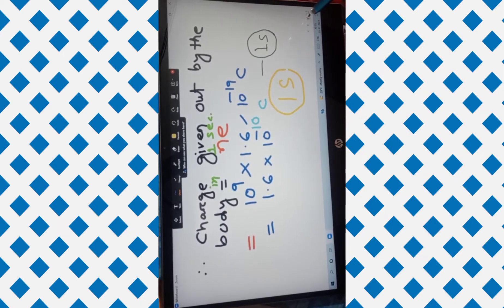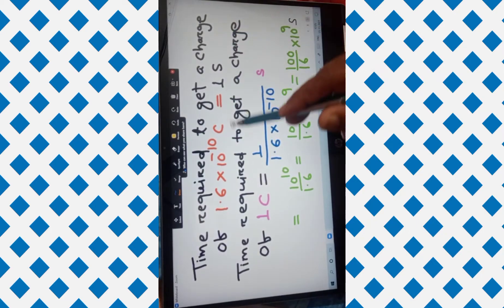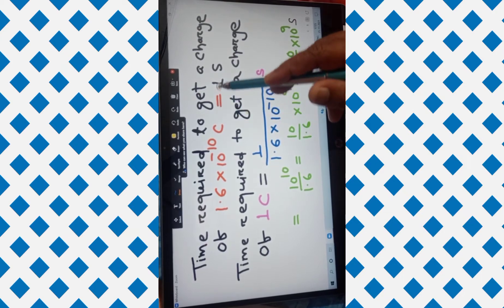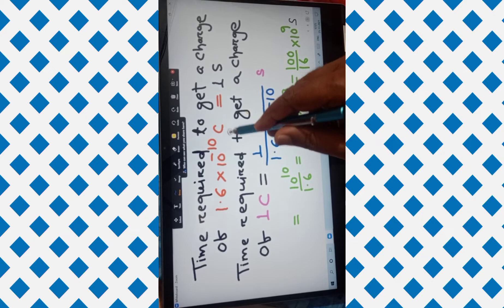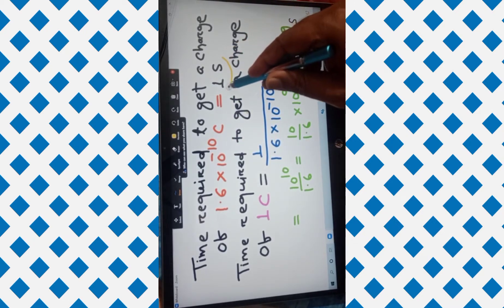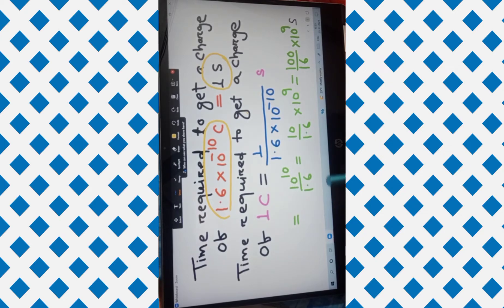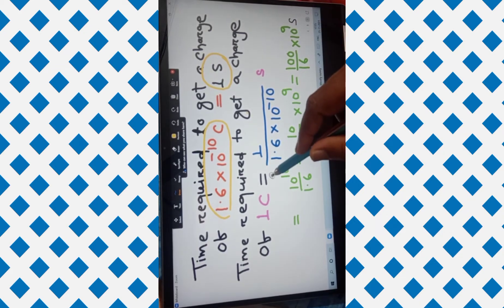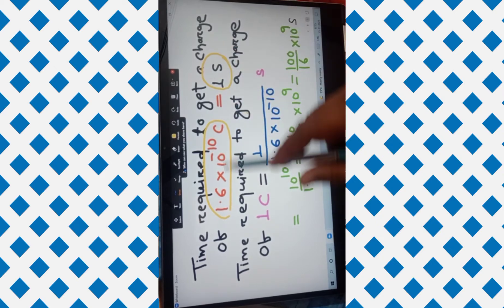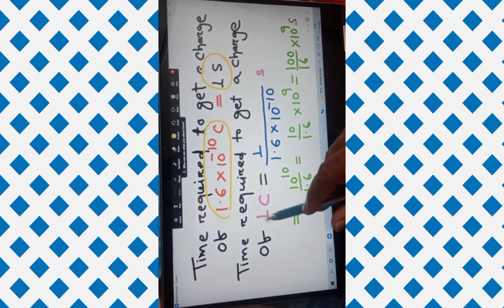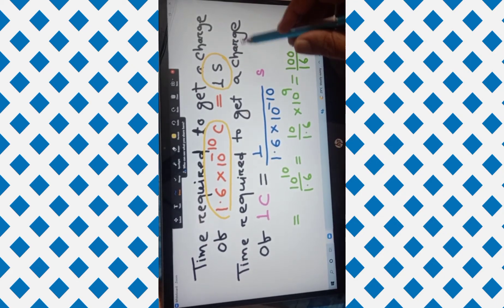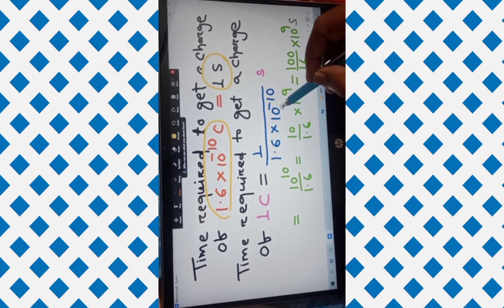But we need to find how much time is required to get one coulomb of charge. Since it takes one second to get 1.6 × 10 to the power minus 10 coulomb, the time required to get one coulomb is equal to 1 divided by 1.6 × 10 to the power minus 10 seconds.